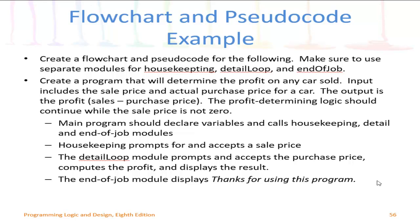Hello, class. We're looking at an example of a flowchart found in Chapter 2 slides. In particular, we're writing a program to create the logic to calculate the profit on a car sold. We're going to ask the user to provide two pieces of input: a sale price and the actual purchase price for a car. The program then calculates the profit by subtracting the purchase price from the sale price and printing it out. This process continues, keeping asking for that input and printing out the profit until the user types zero for the sale price.